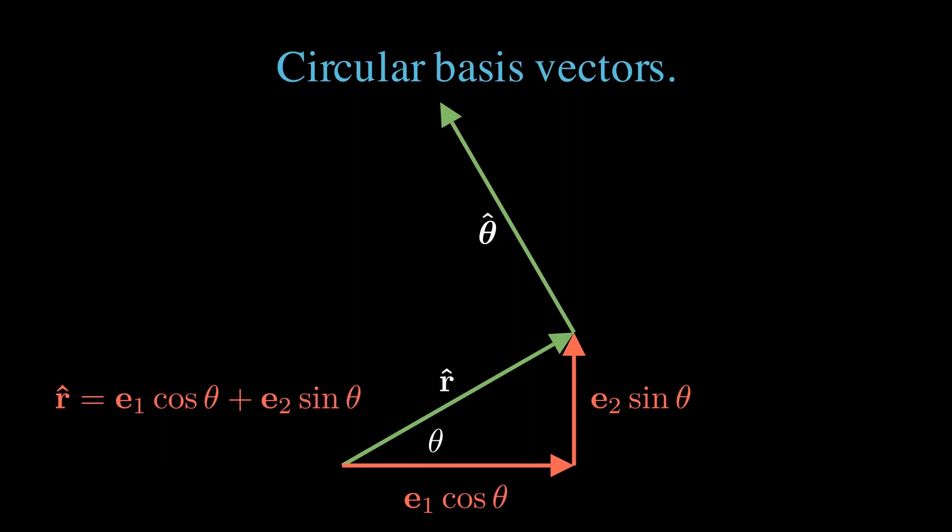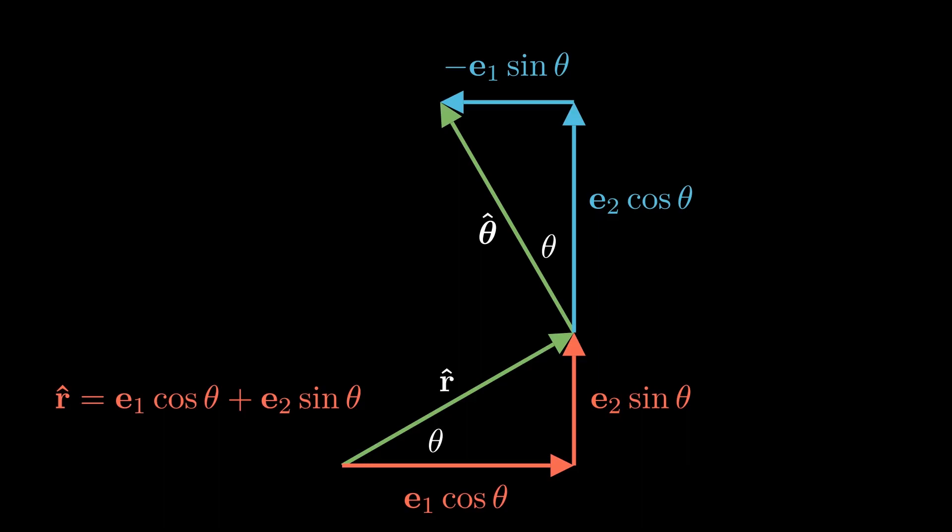The tangential unit vector theta hat is at an angle theta from the vertical, so it equals minus e1 sin theta plus e2 cos theta. We could work with this trigonometric form for the circular unit vectors, but we will opt instead to describe these rotated frame vectors using geometric algebra.